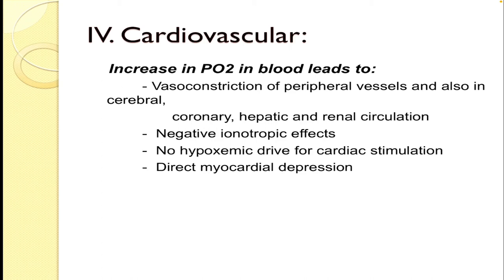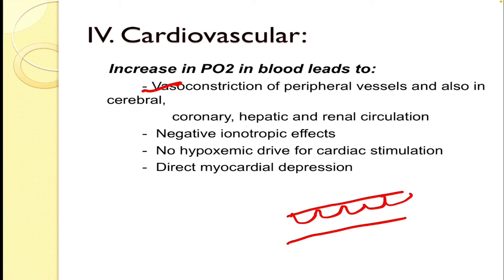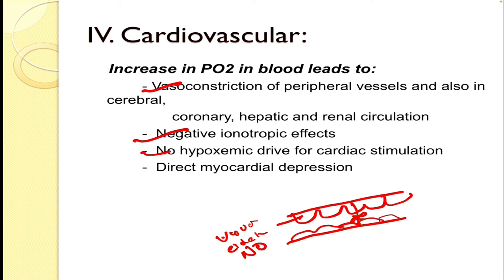Another important manifestation is cardiovascular, in which an increase in PO2 of the blood leads to vasoconstriction of peripheral vessels and also in the cerebral, coronary, hepatic, and renal circulation. The mechanism is that endothelium in blood vessels produces a vasodilator known as endothelium-derived nitric oxide. The high concentration of oxygen causes decreased production of this vasodilator, leading to vasoconstriction. There are also negative inotropic effects, absence of the hypoxemic drive for cardiac stimulation, and direct myocardial depression.